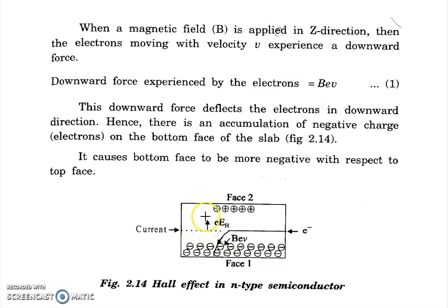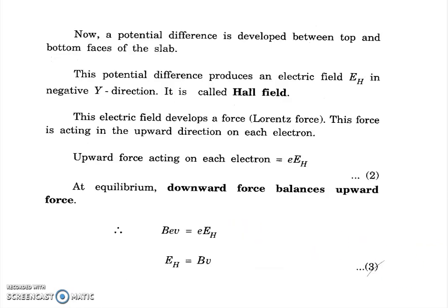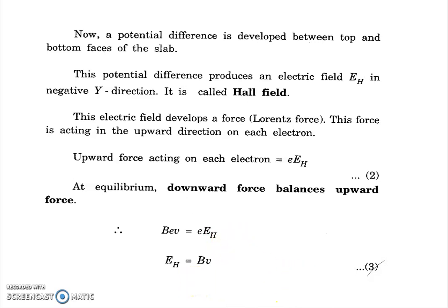The upward force and downward force reach an equilibrium condition where the two forces balance. The downward force is BEV and the upward force is EH. At equilibrium, the downward force balances the upward force: BEV equals EH, therefore EH equals BV.